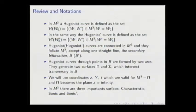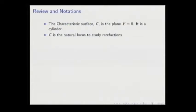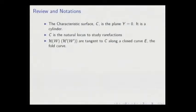We have three important submanifolds of the wave manifold: characteristics, sonic, and sonic prime. The characteristic surface is the plane y equals zero, and it is topologically a cylinder. The characteristic surface C is the natural locus of fold bifurcations. The Hugoniot curve is tangent to C along a closed curve E, the fold curve.